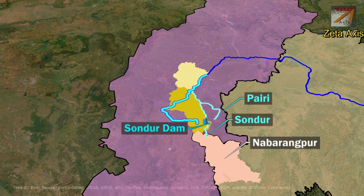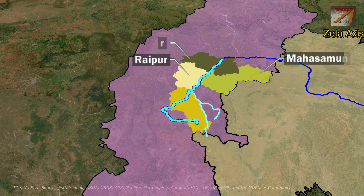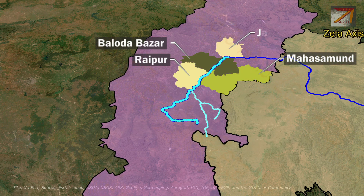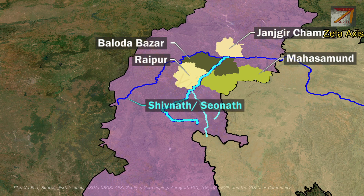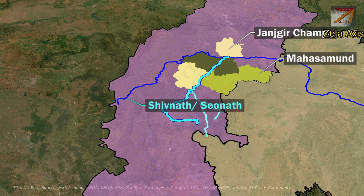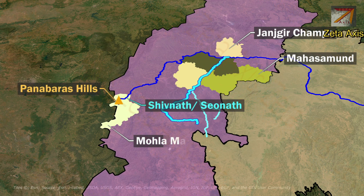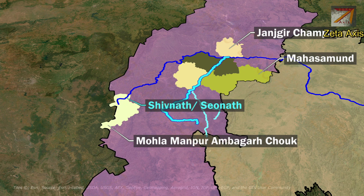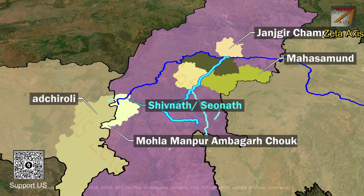The Mahanadi river continues to move north through the districts of Raipur, Mahasman, and Paludabazar. Within Janjagir Champa district of Chhattisgarh, Mahanadi river meets Sionath river. Sionath is the longest tributary of Mahanadi river, also called Sivnath river. It originates from Panabaras hills in Mohalla-Manpur district of Chhattisgarh, though some estimates suggest it originates in Gadchiroli district of Maharashtra.